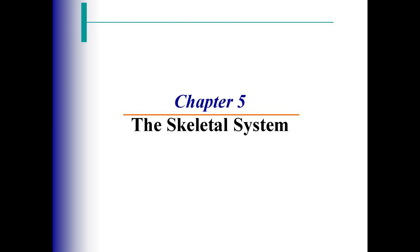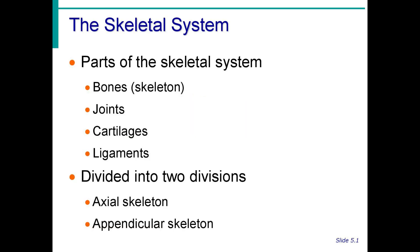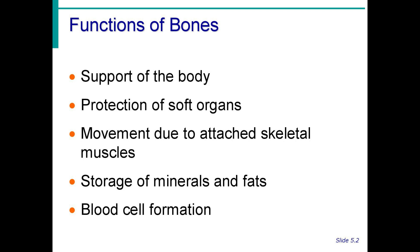Today we will be discussing Chapter 5: the skeletal system. The parts of the skeletal system are bone, joints, cartilage, and ligament. We will be discussing more about the bone since we have 206 bones in the human body. It is divided into two divisions: the axial skeleton and the appendicular skeleton, which will be discussed further on this topic.